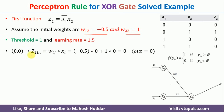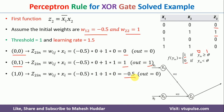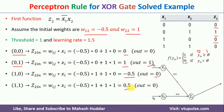Verifying with updated weights: input 0,0 gives Z2_in=0, output is 0, expected is 0. Input 0,1 gives Z2_in=1, output is 1, target is 1. Input 1,0 gives Z2_in=−0.5, output is 0, expected is 0. Input 1,1 gives Z2_in=0.5, not greater than 1, output is 0, expected is 0. All inputs are correctly classified with W12=−0.5 and W22=1.